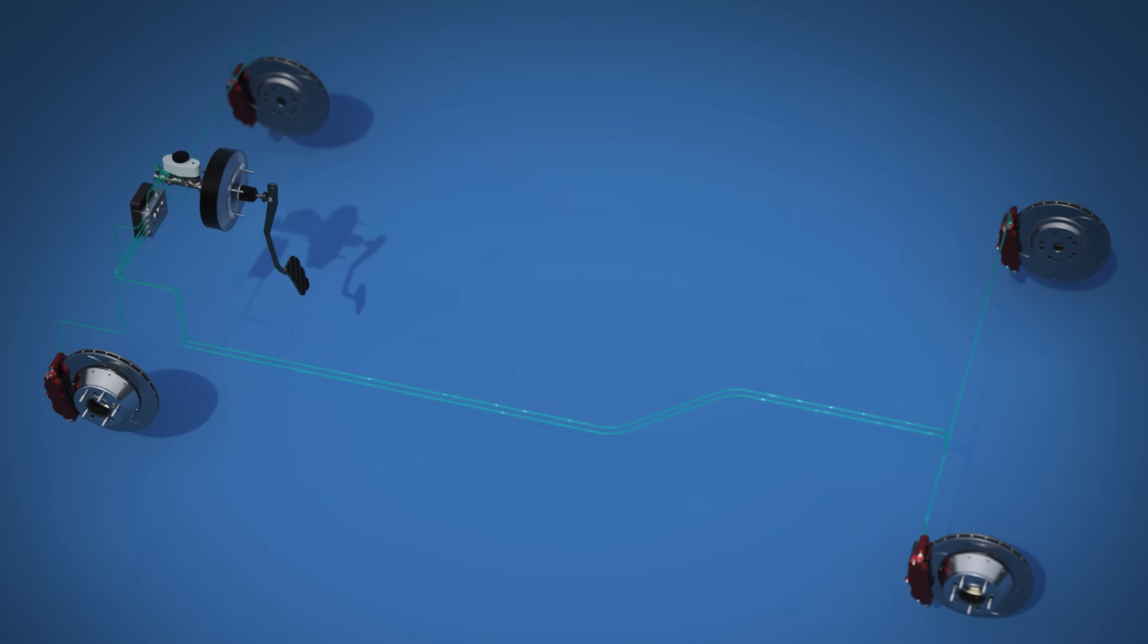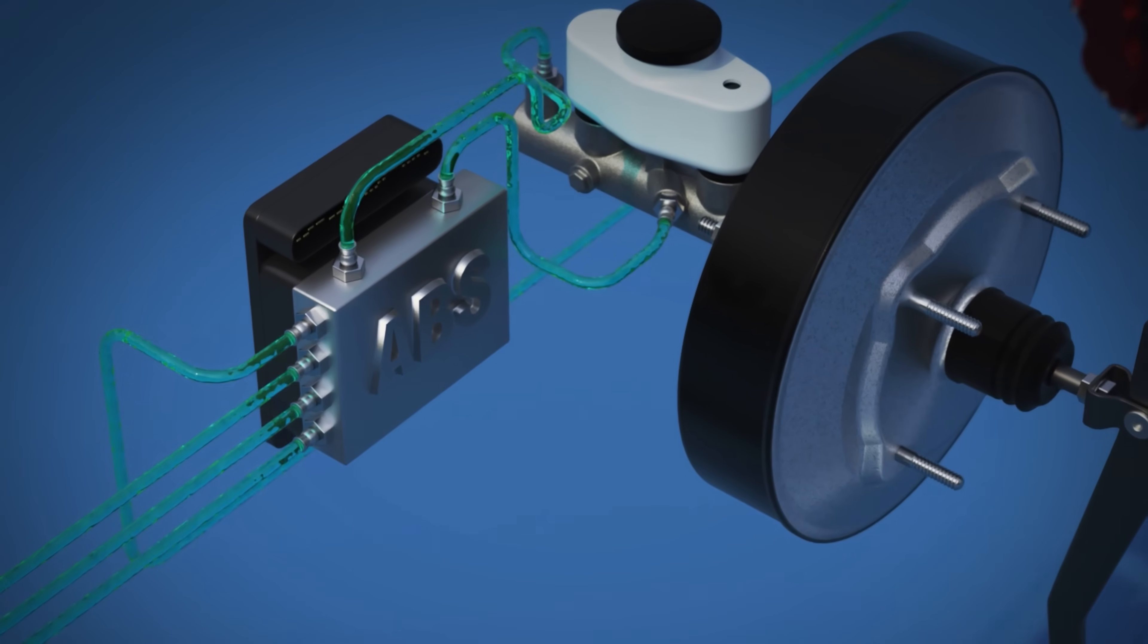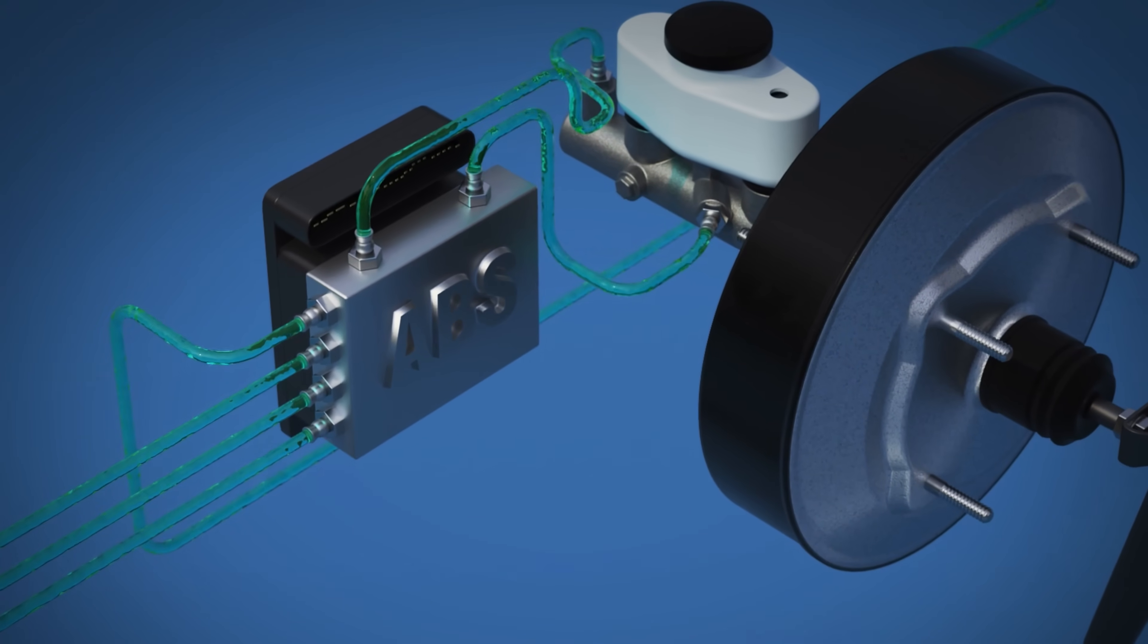Along the way, the brake fluid passes through the ABS module, which regulates pressure to prevent the wheels from locking up under slippery conditions or hard braking.